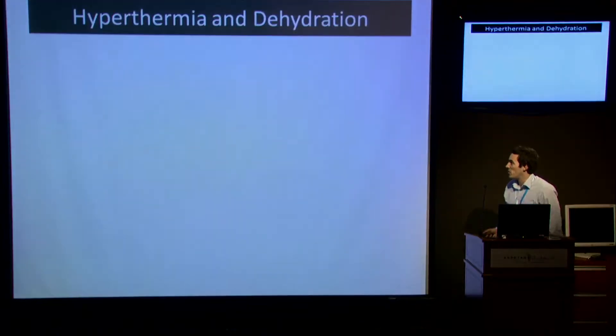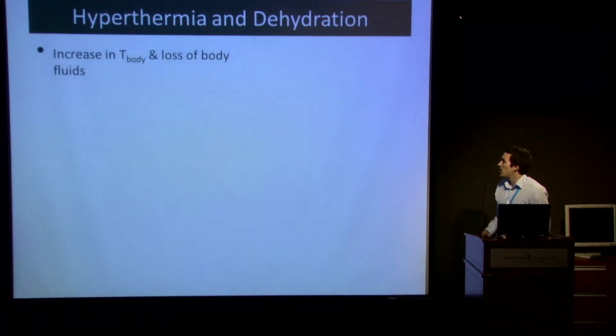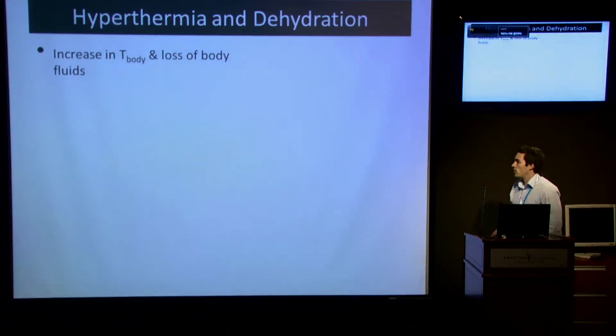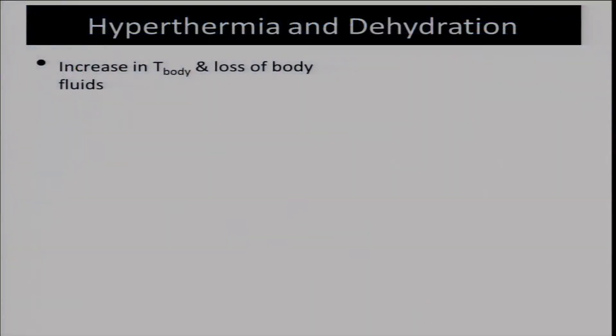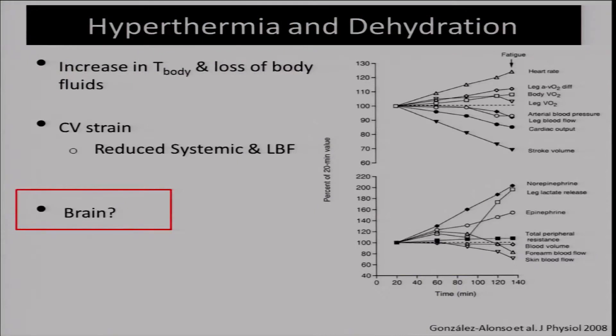Without treading on too many toes and repeating the same message, we know that hyperthermia and dehydration result in increases in body temperature and loss of body fluids. From this data from Professor Gonzalez-Alonso, we can see that during progressive exercise with dehydration, from the 20-minute value there is a progressive decline in leg blood flow, cardiac output, and these are all related to a mechanism of cardiovascular strain.